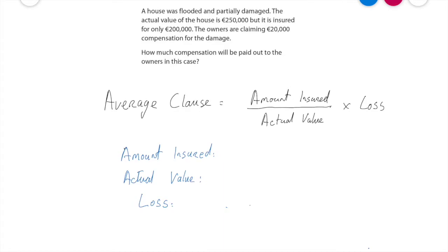In this video we're going to calculate average clause with real numbers. We have a sample question at the top: a house was flooded and partially damaged. The actual value of the house is €250,000 but it's only insured for €200,000. The owners are claiming €20,000 in compensation for the damage. How much compensation would be paid out to the owners in this case?